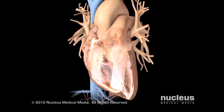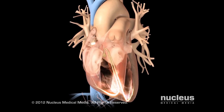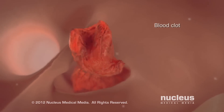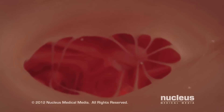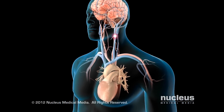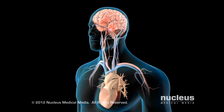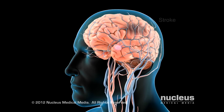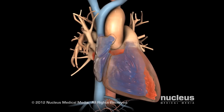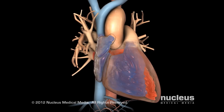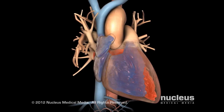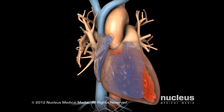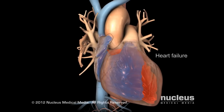After these irregular contractions, the chambers may not empty completely. When blood collects in the atria, clots may form. A clot can flow out of your heart, through your neck, into your brain, where it can cause a stroke. Blood pooling in your ventricles deprives your body's tissues of oxygen and nutrients. If your heart is consistently unable to pump enough blood to meet the body's needs, you can develop heart failure.